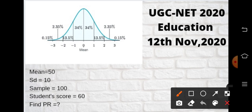You cannot apply the percentile rank formula directly. Since you have the mean, standard deviation, sample, and score, you must think that this will come under your Z-score.